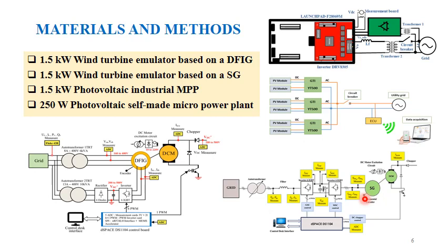The second one is a 1.5 kW wind turbine emulator based on a synchronous generator. A similar structure is used, but we need a back-to-back machine side converter and a grid side converter between the grid and the stator of the synchronous generator. The third one is a 1.5 kW photovoltaic industrial micropower plant, where six photovoltaic panels are connected — each two with one grid-tie inverter. The three grid-tie inverters are connected to the grid via a circuit breaker and to the energy communication unit.